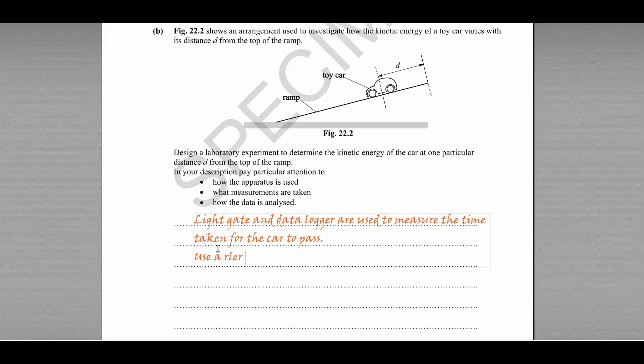Use a ruler to measure the length of the car. Or perhaps you could add an interrupt card to the car if the shape wasn't suitable. Measure the length of that instead. Use v equals length divided by time. So speed is distance over time. The distance here is the length to determine speed.